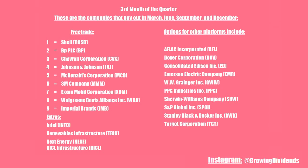For the third month of the quarter, these are the companies that pay out in March, June, September and December, and these include Shell, BP, Chevron, Johnson & Johnson, McDonald's, 3M Company, ExxonMobil, Walgreens, Imperial Brands, Intel, Renewables Infrastructure, Next Energy and HICL Infrastructure.